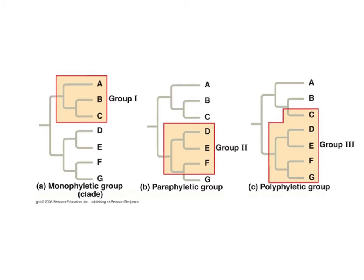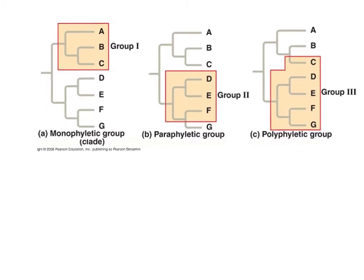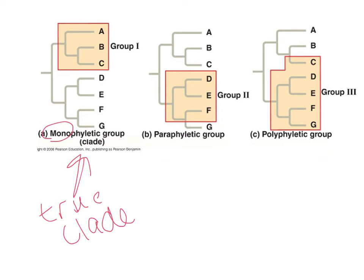A monophyletic group — also called a true clade — is a group with a common ancestor and all of its descendants. The colored rectangles from the previous diagram were all monophyletic groups.